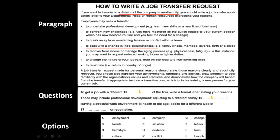The third question starts on a negative tone: leaving a stressful work environment — what should a person do? The next line says to recover from illness or managing the aging process. In this instance, you may want to request reducing workload or lighter duties, to change the nature of your job, and to repatriate. So repatriation is there, and just before that is changing the nature of your job — meaning changing the type of employment you have. That gives you the answer to question 17. By going through the questions first, you are better equipped to find answers as you read the paragraph. This was an intermediate-level question.